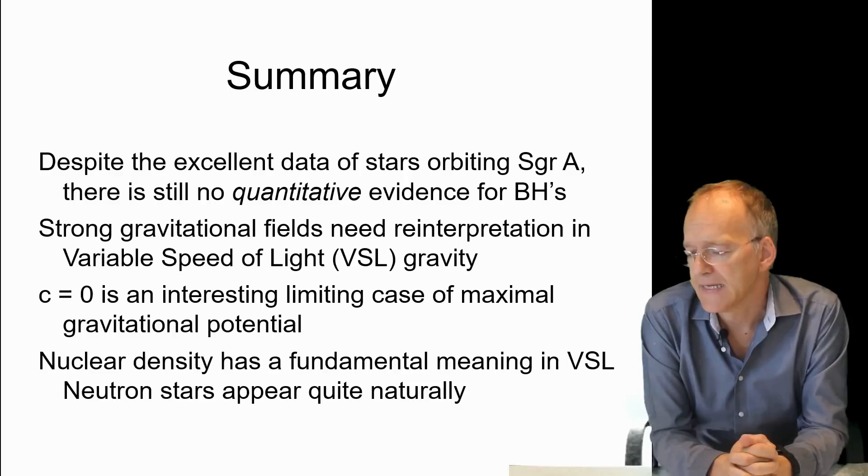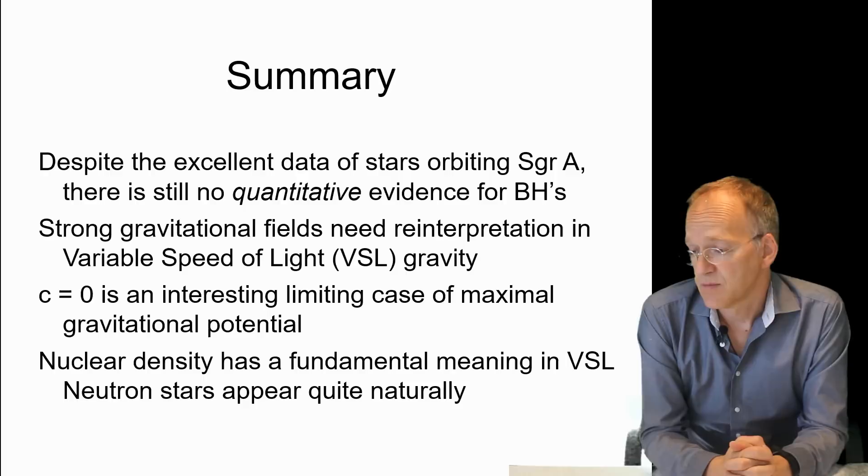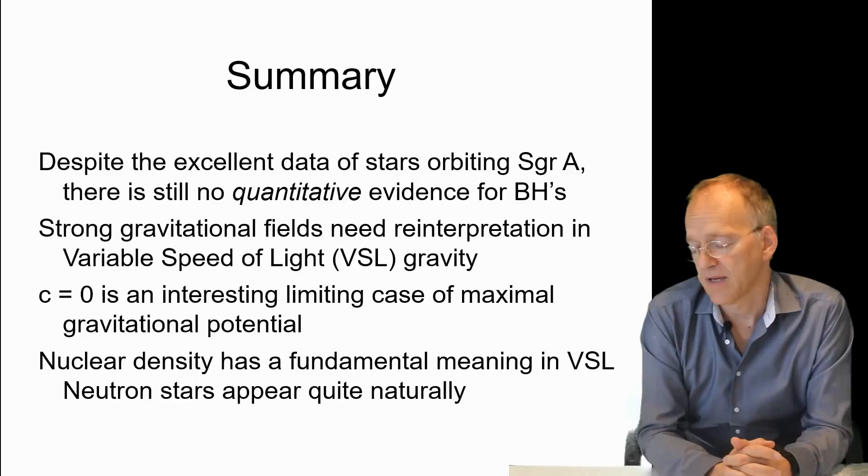c equals zero is an interesting limiting case of maximal gravitational potential. We might think about that—of course, we cannot use the conventional formula any longer; we need to include Planck's constant. The other interesting thing is that nuclear density has a fundamental meaning in variable speed of light.